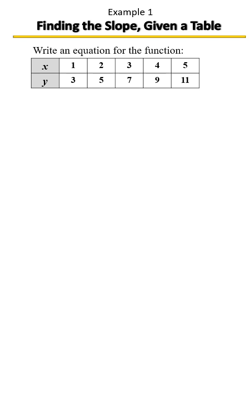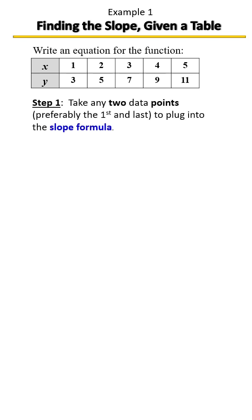Let's write an equation using the table of values that are given. Step one is to take any two points from the table to plug into the slope formula. In many cases, the first and last points are the best points to plug in because they give you a more accurate picture of how the data changed over a period of time.